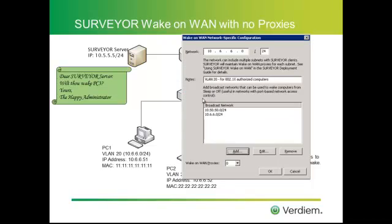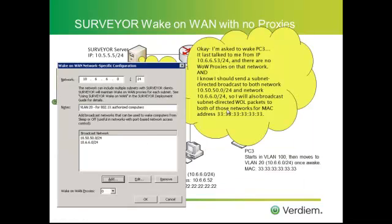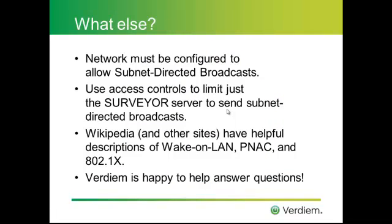Surveyor is also able to support scenarios where there are no Wake on LAN proxies for a network, so that if you've implemented a network that allows subnet-directed broadcast forwarding of Wake on LAN packets, you don't need to maintain Wake on LAN proxies. In this example, we've configured Surveyor to send wake-up packets to two different broadcast networks: 10.6.6 and 10.50.50. When configured this way, the Surveyor server says: I've been asked to awaken PC3 — it talked to me from network 10.6.6. There's no Wake on LAN proxy on that network, but I know I should send a Wake on LAN broadcast to both network 10.50.50 and 10.6.6. The result is the PC will wake up as expected.